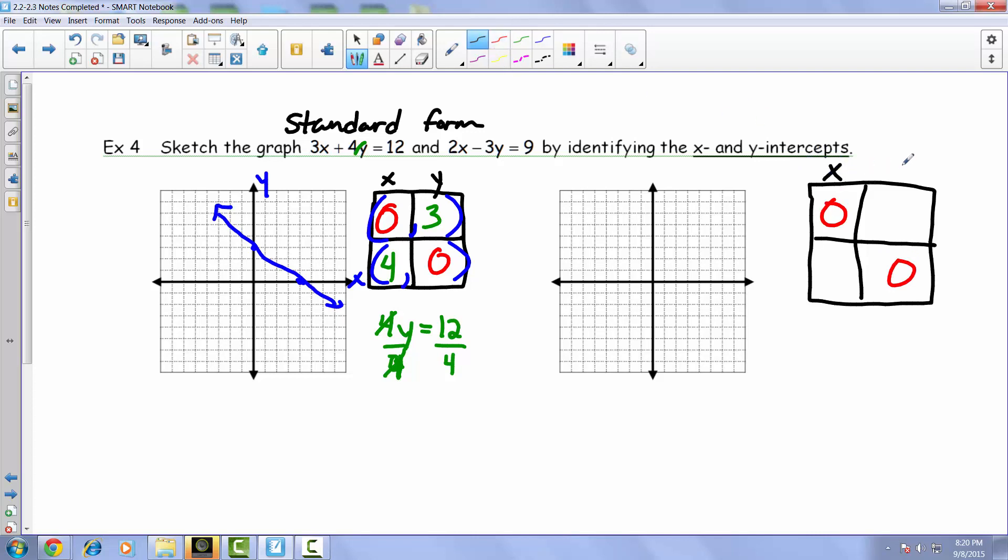Here's our x and y. Same exact idea. When we throw in 0 for x, this guy is pretty much gone. So negative 3 times what gives you 9? Well, negative 3 would accomplish that.